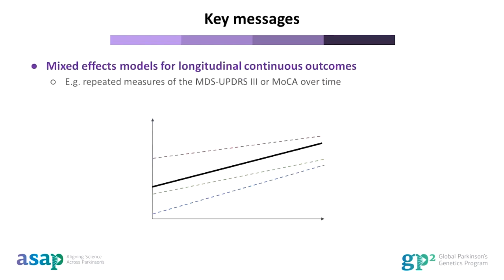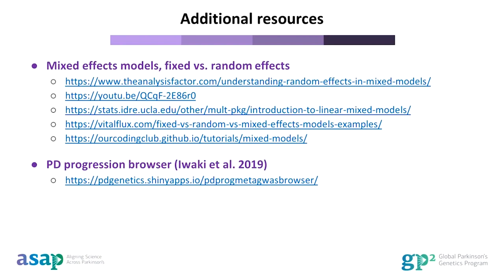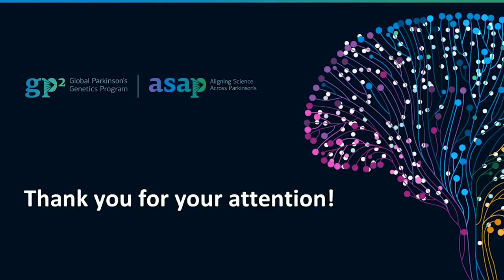To conclude this module, I have talked today about how to analyse longitudinal data for your progression GWAS, focusing on two common approaches. Firstly, you can use mixed effects models for analysing longitudinal continuous outcomes, such as repeated measures of the MDS-UPDRS or MOCA. Secondly, you can use Cox proportional hazard models for longitudinal binomial outcomes, such as mortality or dementia. These are just some of the ways to analyse progression data in your GWAS. I have also linked Hirotaka Iwaki's Parkinson's Progression Browser, which may be helpful if you want to meta-analyse your own progression GWAS results with publicly available summary statistics. Thank you for your attention today, and I hope you enjoy the module.